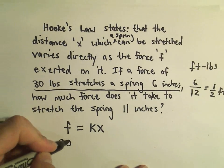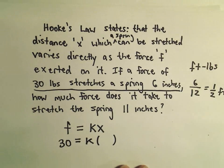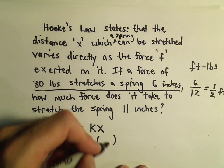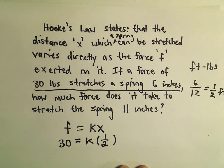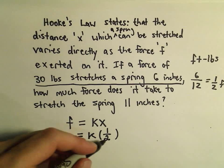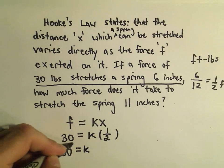So we know that 30 pounds equals k times however far we stretch it. So again, 6 inches or equivalently 1 half of a foot. So if we solve this for k, we can simply multiply both sides by 2, and we would get that k has the value 60.